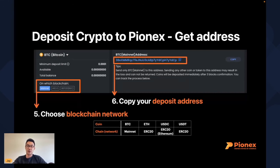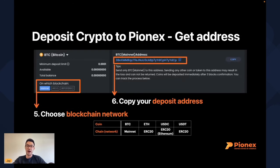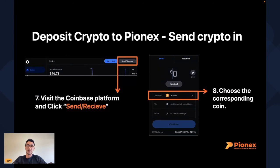But first, choose the right blockchain network. On Coinbase, they don't always show you which network it is, so here are the top four most commonly used: for Bitcoin, the network is Mainnet; for Ethereum, it's ERC20; for USDC, it's also ERC20 (but on Coinbase, select Ethereum); and for USDT, it's also ERC20. Make sure you get this correct — choosing the wrong blockchain network will send your crypto to the wrong place and you will lose it.